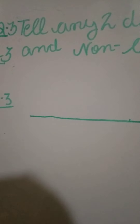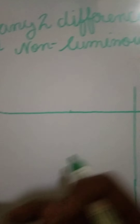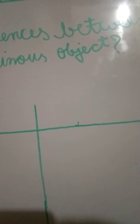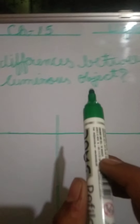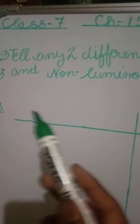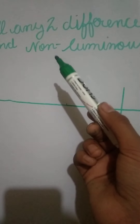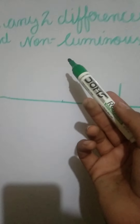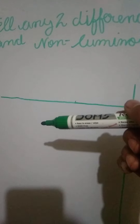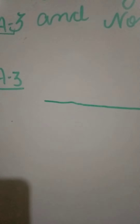Hello everyone, this is Hardik from evidhyati.com. Coming to question number three of chapter 15, Light, from Science class seven. Question number three is: tell any two differences between luminous object and non-luminous object. In the last video I told you I would tell you the differences, but I had some technical problems with my mobile, so I'm covering it now.